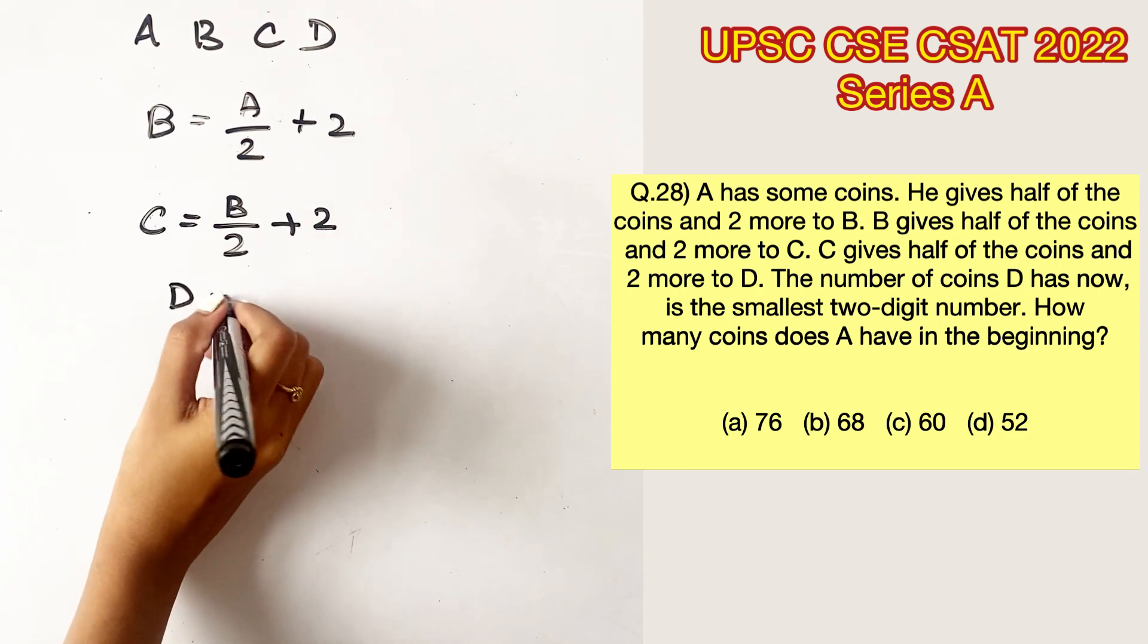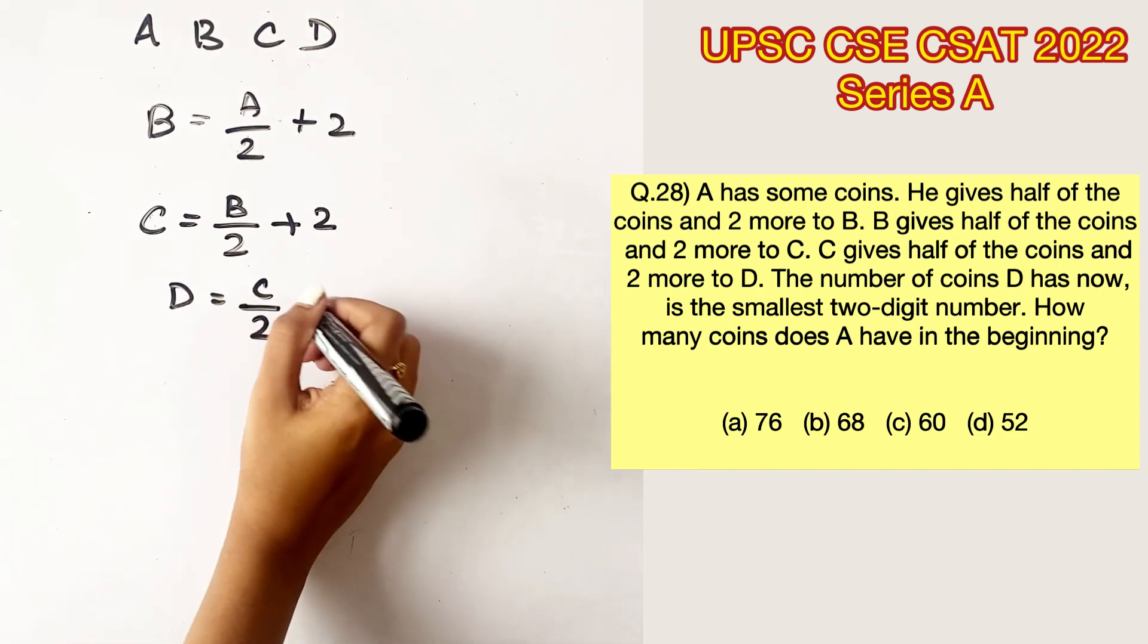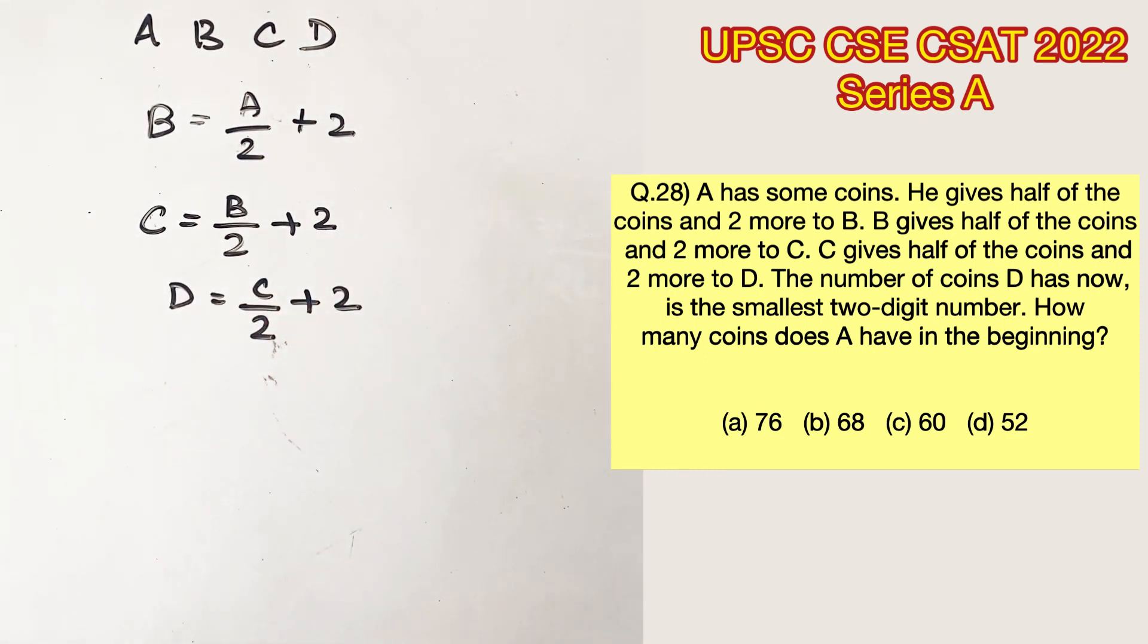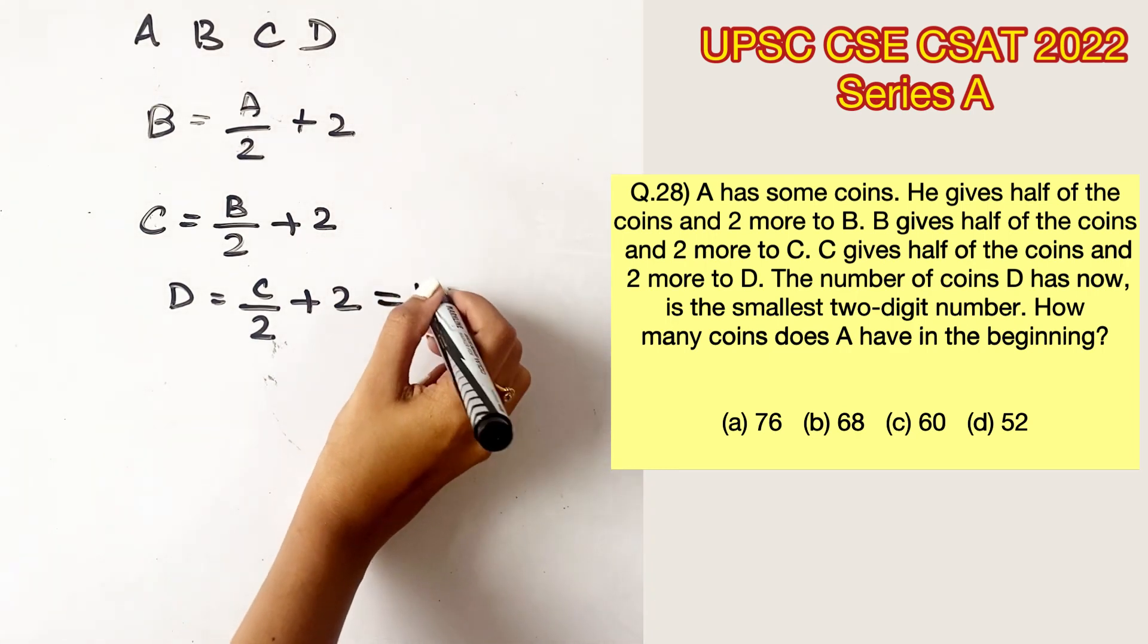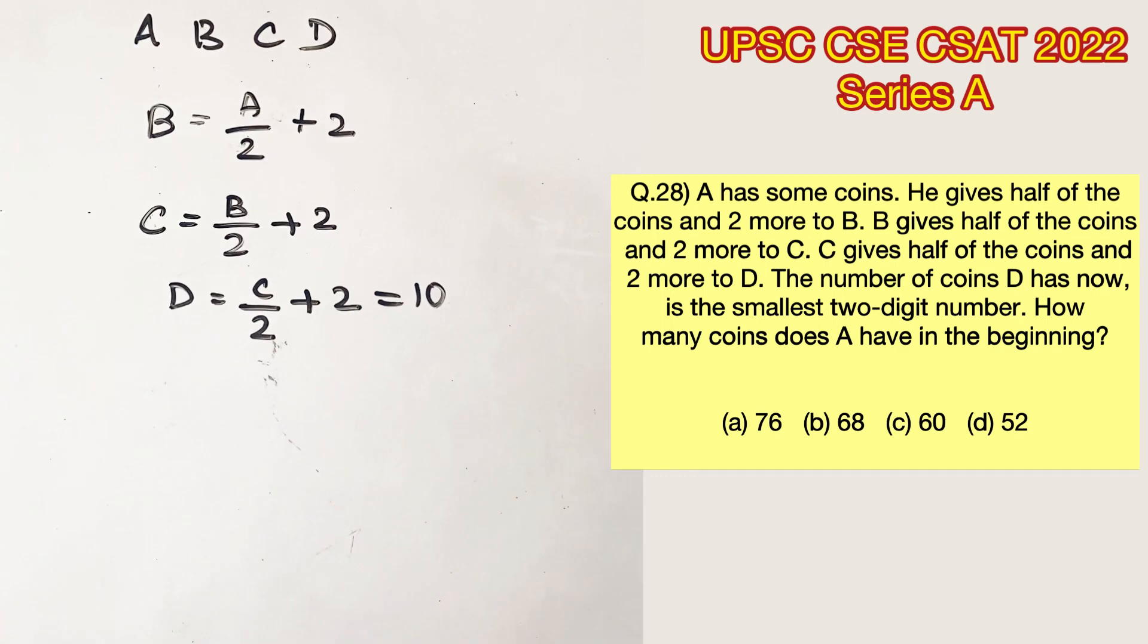Then the same happens with C. C gives half of his coins plus 2 to D. So these are the three equations. Now they are saying the number of coins D has now is equal to 10. So this equation equals 10.